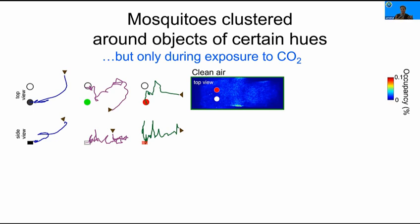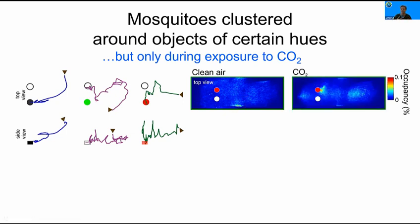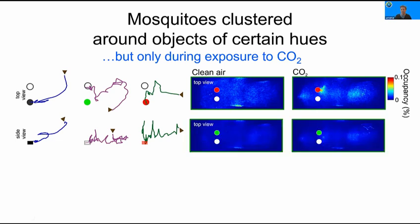Looking at individual trajectories plotted in 2D space as an occupancy map: in clean air, mosquitoes are going to the sides and the top of the tunnel. By contrast, when there is CO2, they go to the middle of the tunnel doing odor tracking, and then actually cluster around the red object downwind of it. For the green object in CO2, they're flying around but don't have a strong preference for the green object relative to the white — there's no preference at all. So we can create a preference index, allowing us to compare between different visual stimuli, examining the time spent in the test object volume versus the white object divided by total time investigating the object. We quantify up to 5,000 trajectories in a given experiment.